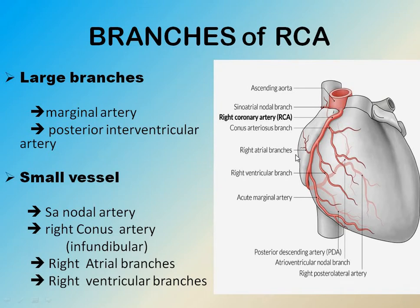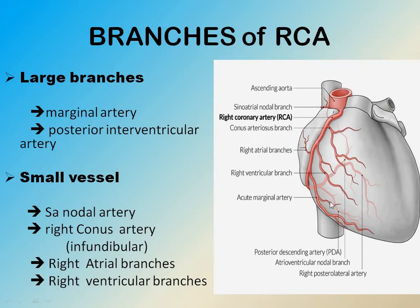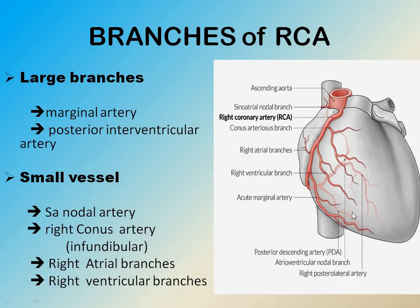Branches of the right coronary artery include large branches and small branches. Large branches are the marginal artery and the posterior interventricular artery. Small vessels include the SA node artery, right conus artery, right atrial branch, and right ventricular branch.